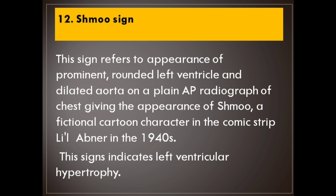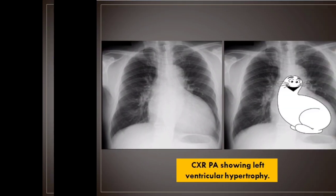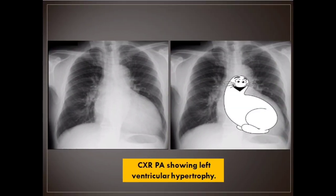Number 12: Schmoo sign. This sign refers to the appearance of a prominent rounded left ventricle and dilated aorta on a plain AP radiograph of the chest, giving the appearance of a Schmoo — a fictional cartoon character from the comic strip Little Abner in the 1940s. This sign indicates left ventricular hypertrophy.